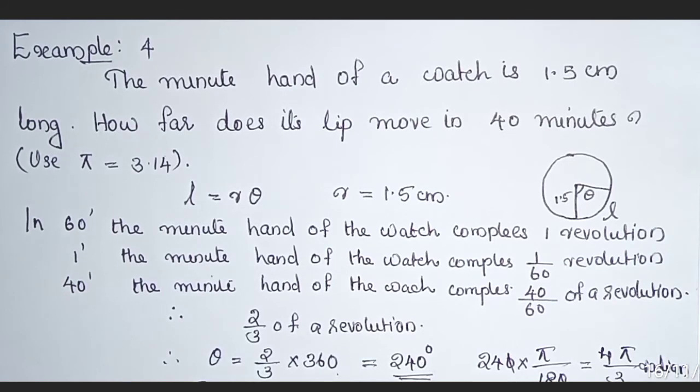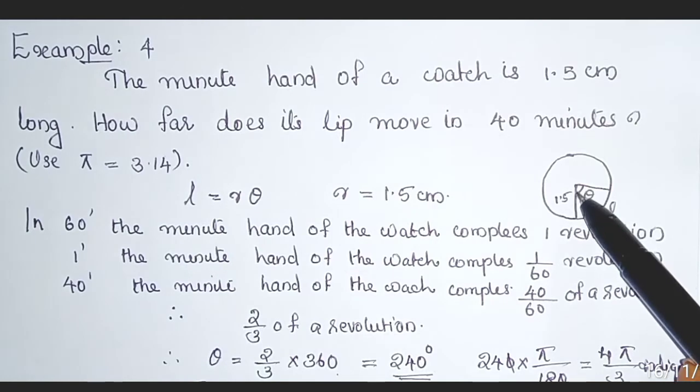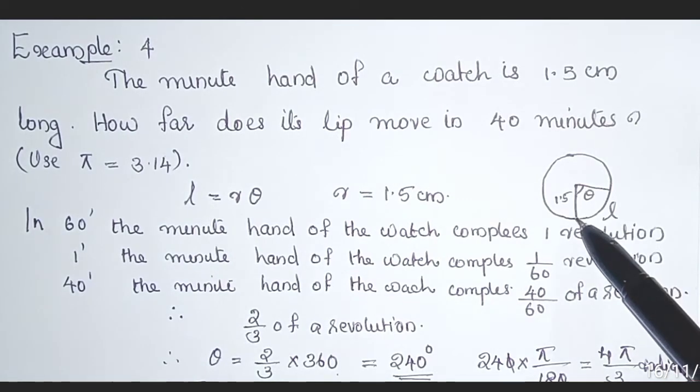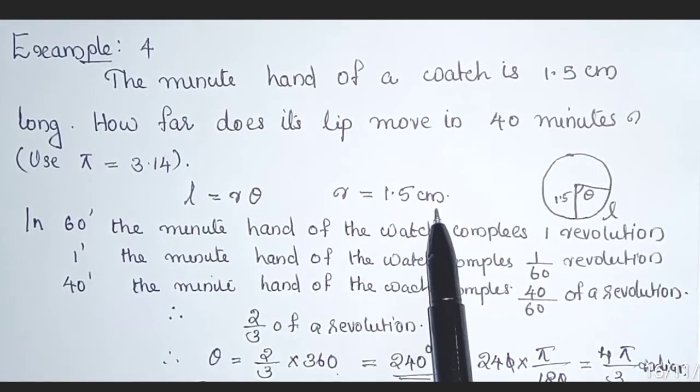The value of π is given. We want to find out how far does the tip move in 40 minutes. Here, the minute hand of a watch is 1.5 cm, so we can take that as the radius. So r = 1.5 cm.